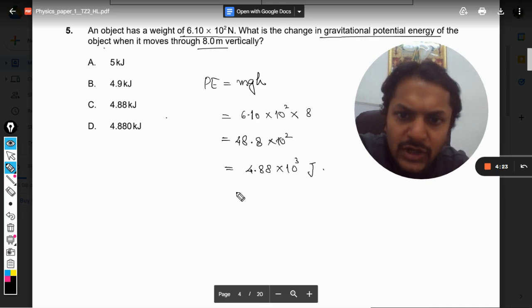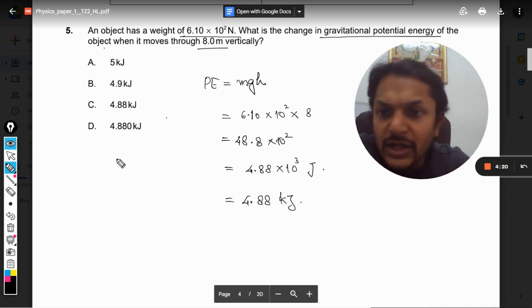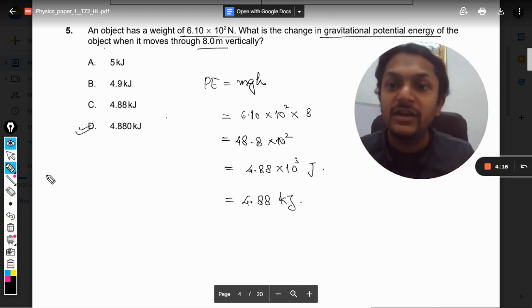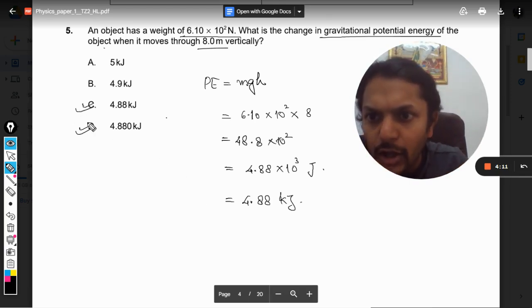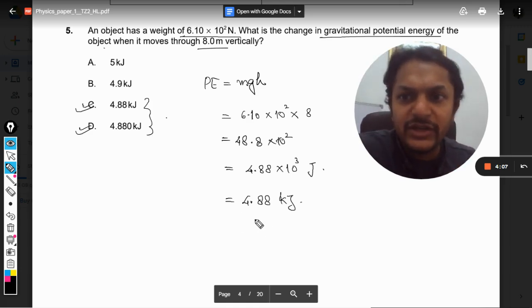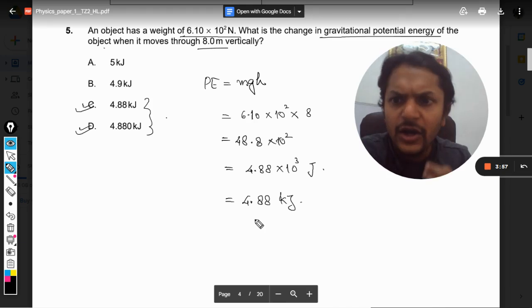Which can be written as 4.88 kilojoules. So it seems that our answer should be D. But please beware, our answer is not D. Why? Because if we try to choose our answer with this much information, we see that even C should be the correct answer as well as D. And now you are confused whether the answer is C or whether the answer is D.